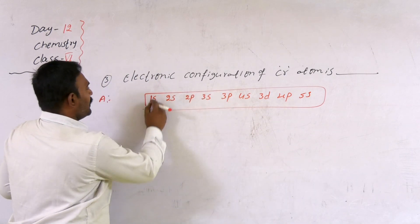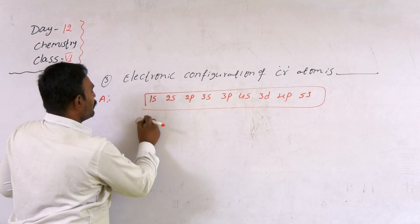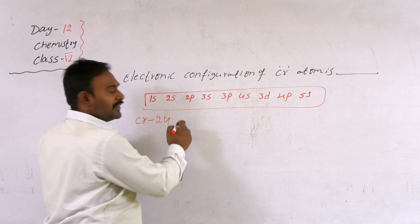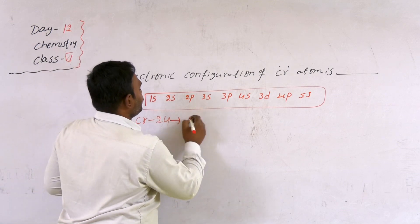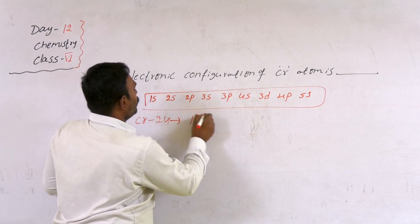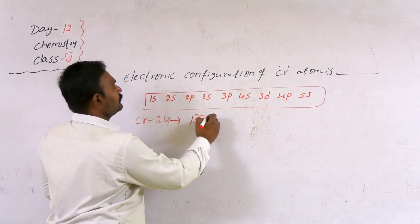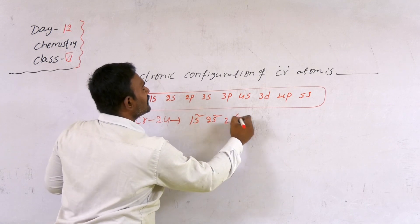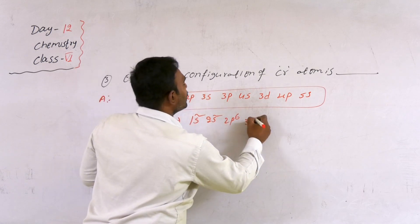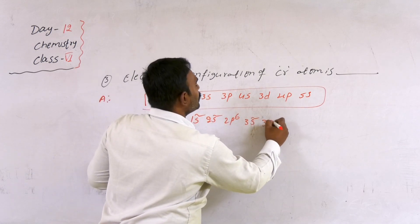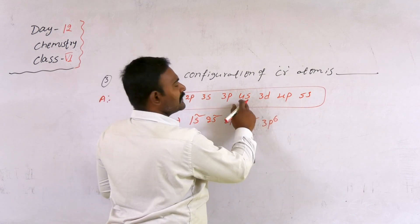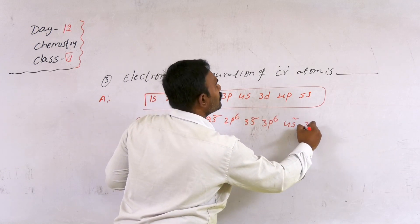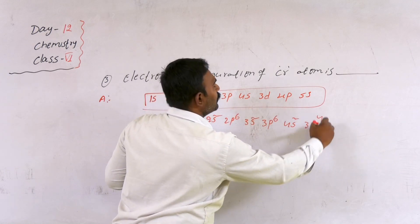For chromium: 1s2, 2p6, 3s2, 3p6, 4s2, 3d4. We would expect this configuration based on the atomic number.